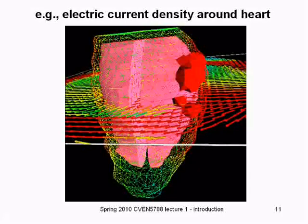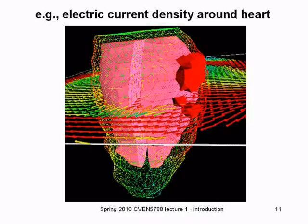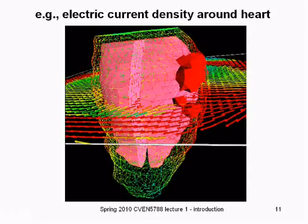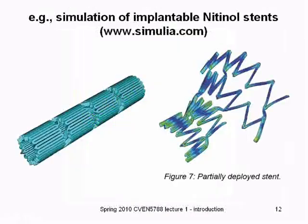This is a result from elsewhere — the simulation of electric current density due to defibrillation, showing the electric current field along a certain plane with arrows. The red elements indicate high current that could potentially damage the walls of the heart chamber. Another example is a shape memory alloy; there are models implemented in Abaqus to deploy stents in arteries for clearing up clogs.